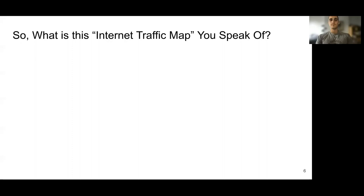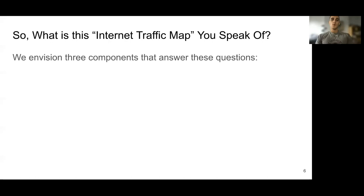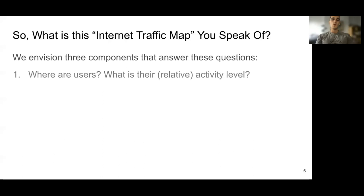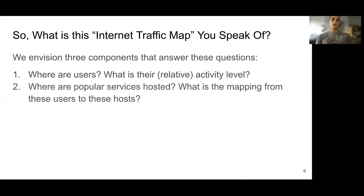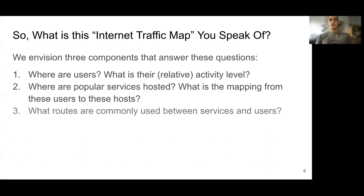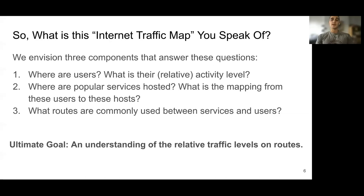So what exactly do we mean by an internet traffic map? We imagine the map consisting of three components which will each answer these questions. First, where are internet users, and what is their relative activity level overall and for popular services? Second, where are popular services hosted, and what is the mapping from these users to these hosts? And finally, what routes are commonly used between services and users? Building these components will lead us toward our ultimate high-level goal of an understanding of the relative traffic levels on routes.